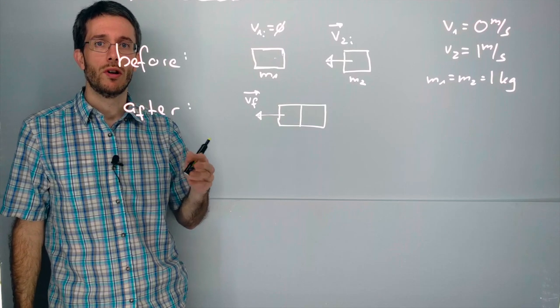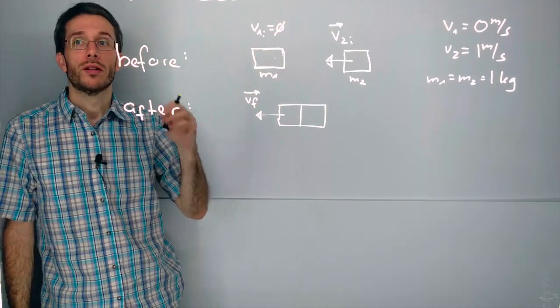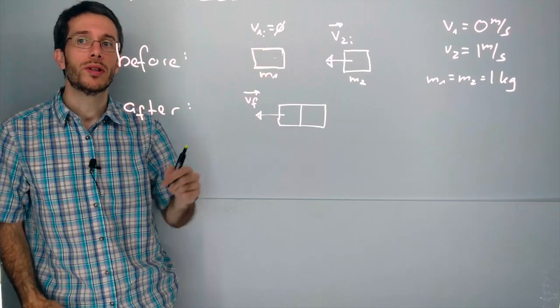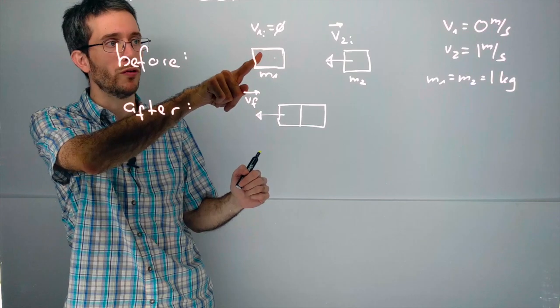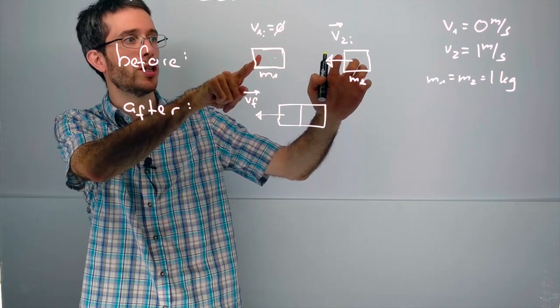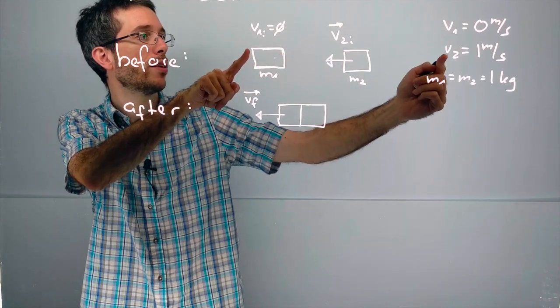Here we have an example of a one-dimensional inelastic collision. Now let's assume that we have two objects, one object which is initially not moving and another object which is initially moving towards the first object.